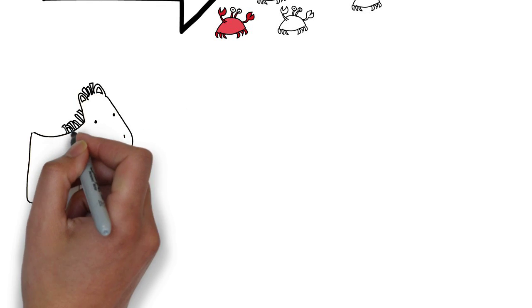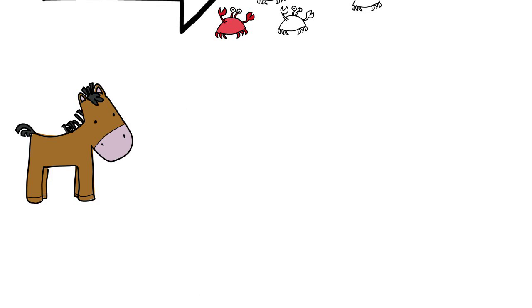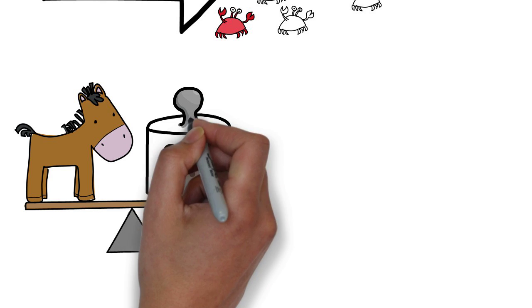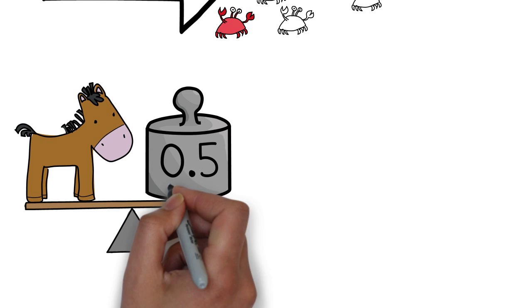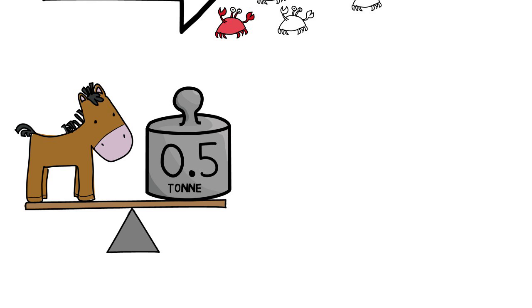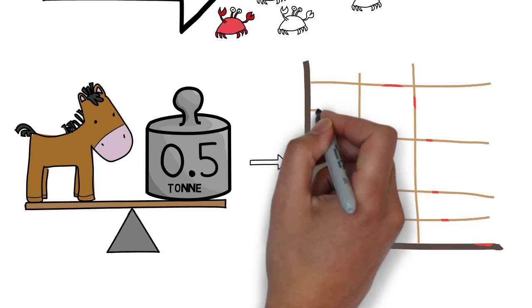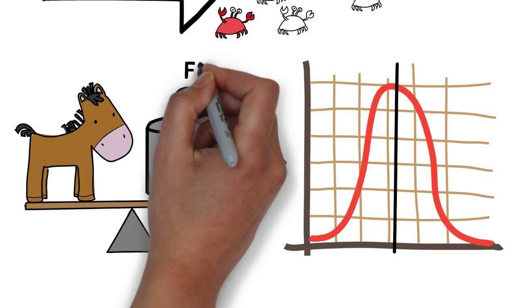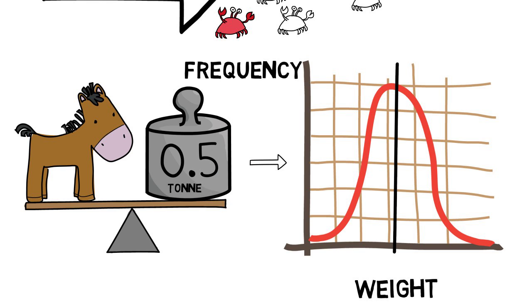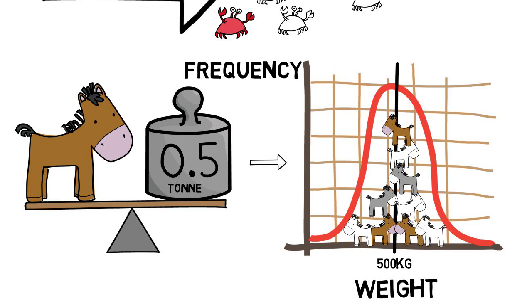This is good, because we can do this. Let's say our idea is that horses weigh an average of 500 kilograms. We can predict very precisely what we would expect a sample of randomly chosen horses to look like under this assumption. So if we weigh 20 horses, and they all weigh somewhere between 400 and 600 kilograms, this would be quite likely if our idea were true, and we can take this as support for, or at least non-rejection of, our idea.